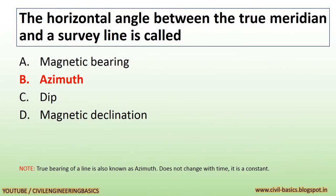The horizontal angle between the true meridian and a survey line is called azimuth. True bearing of a line is also known as azimuth. It does not change with time — it is a constant.